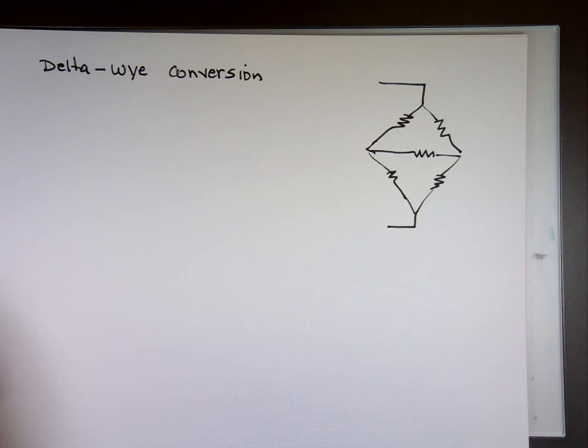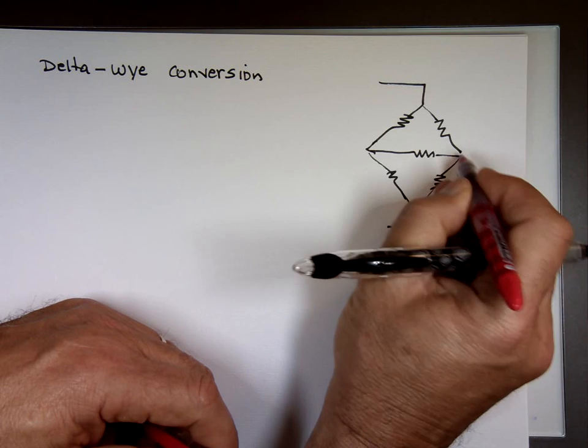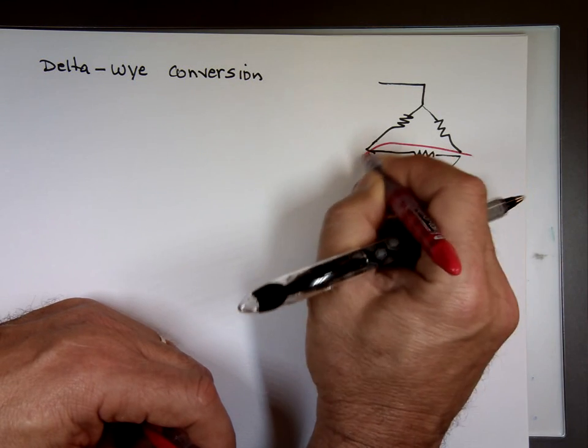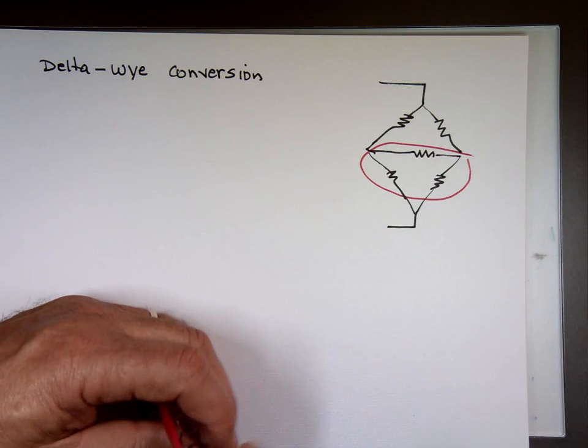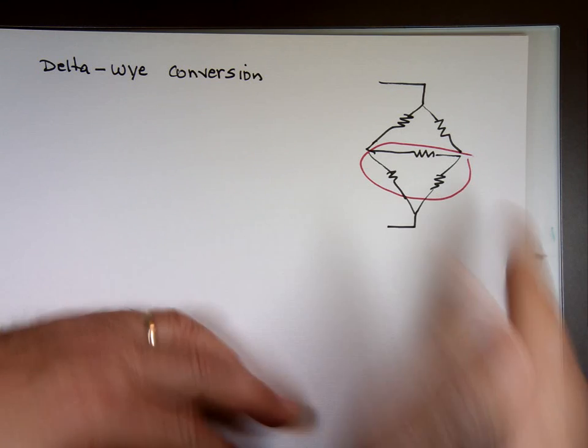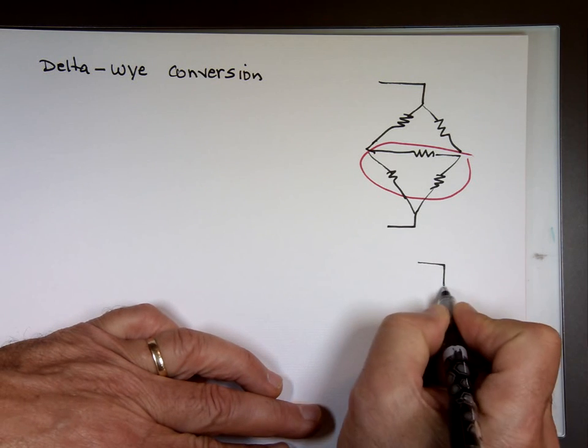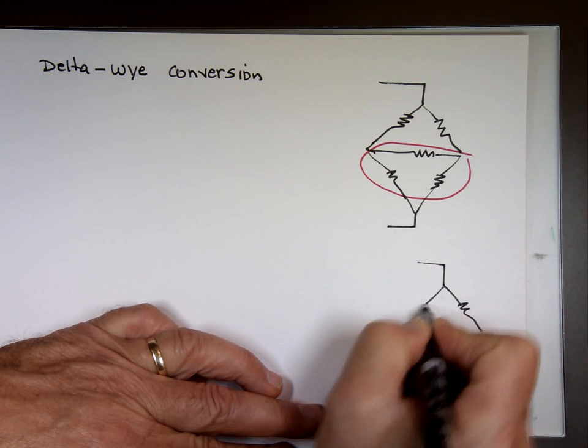If I can take this piece, if I said simplify this, you really couldn't simplify the circuit if I said find the equivalent. But what will happen if I can take that piece out now and replace it with an equivalent value that looks like this?